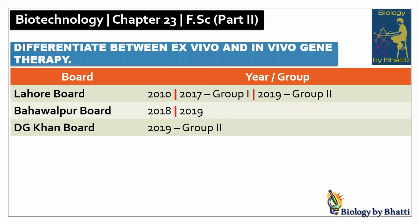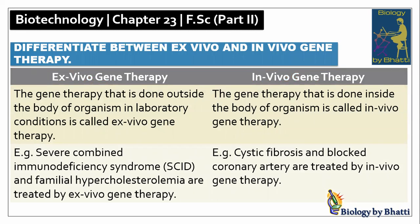Short question number seven: Differentiate between ex-vivo and in-vivo gene therapy. Past paper references: Lahore board 2010, 2017 group 1, 2019 group 2; Bahawalpur board 2018 and 2019; BG Khan board 2019 group 2. In ex-vivo gene therapy, cells or tissue are removed from the patient's body, the corrected gene is inserted into those cells outside the body, and then the modified cells or tissue are returned to the patient. In in-vivo gene therapy, the gene is delivered directly into the patient's body. Examples of ex-vivo therapy include combined immunodeficiency syndrome and familial hypercholesterolemia; in-vivo examples include cystic fibrosis and blocked coronary artery angioplasty.